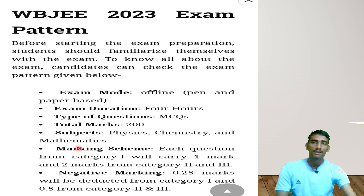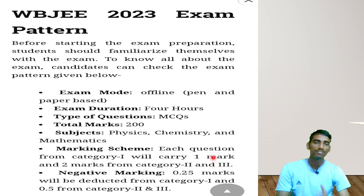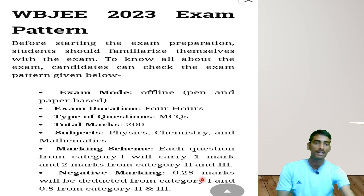Regarding the marking scheme: questions from Category 1 carry 1 mark each, while Category 2 and Category 3 carry 2 marks each. There is also negative marking — 0.25 marks deducted for Category 1 and 0.5 marks deducted for Category 2 and 3. So you should be very aware of the negative marking and attempt questions carefully.